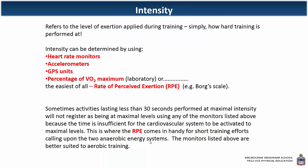When looking at intensity — how hard — there are a variety of ways to measure it. Rate of perceived exertion is a really easy way; you don't need any equipment to do it. It may not be as accurate as working in a laboratory where you can look at percentage of VO2 max. But when you do a laboratory test, you align percentage of VO2 max with rate of perceived exertion, and over time you'll develop a real ability to tune in to what your percentage is.